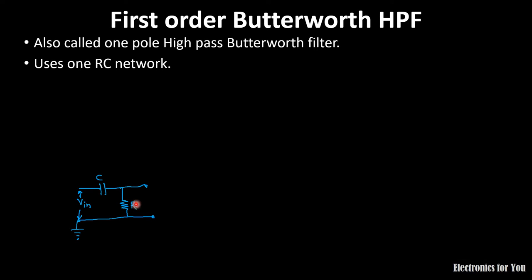For a high-pass filter, we generally measure the output voltage across the resistance. The combination for the high-pass filter will look like this: the circuit consists of a capacitor and a parallel resistance where we measure the output voltage across the resistance. This is our input voltage where we apply it, and here we take the output.